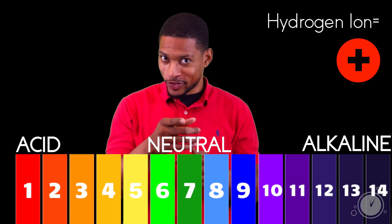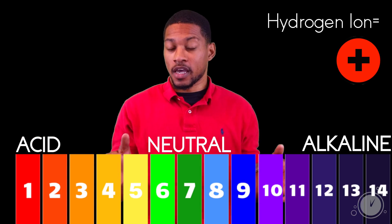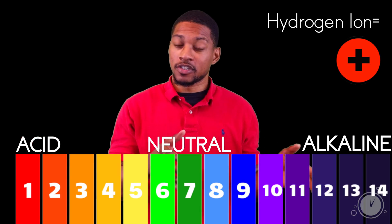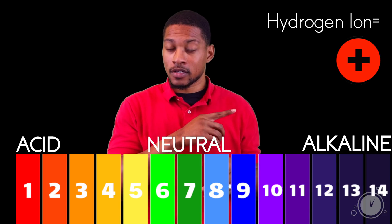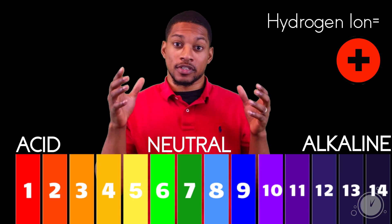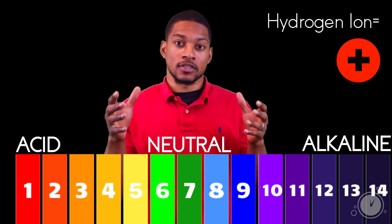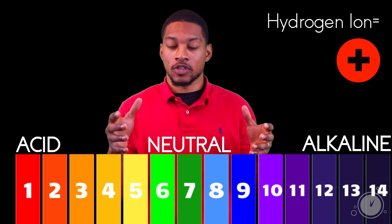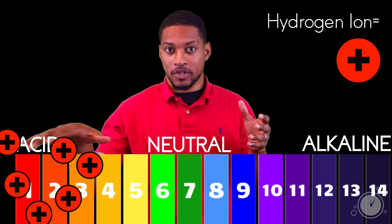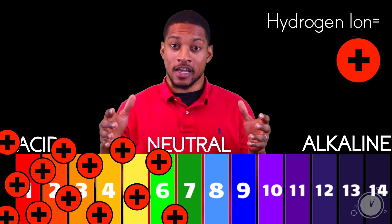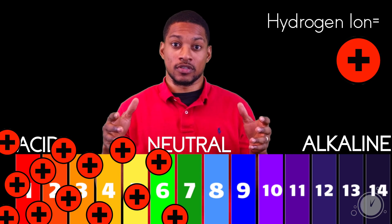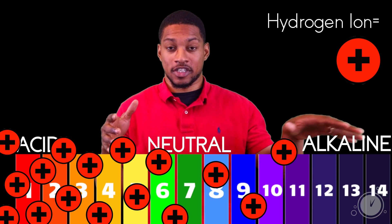But you knew that, didn't you? So because pH is the potential of hydrogen ions, the more hydrogen ions in a solution, the more acidic it'll be. The less hydrogen ions in a solution, the more alkaline it'll be.